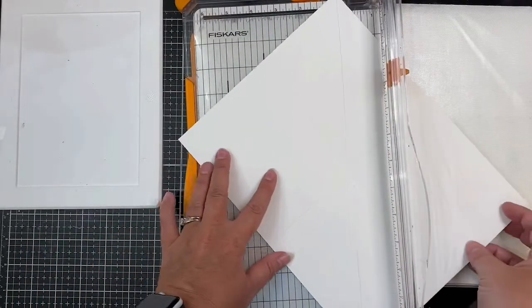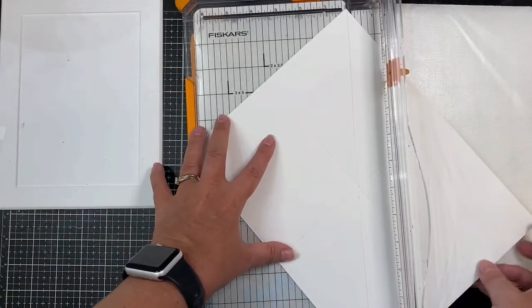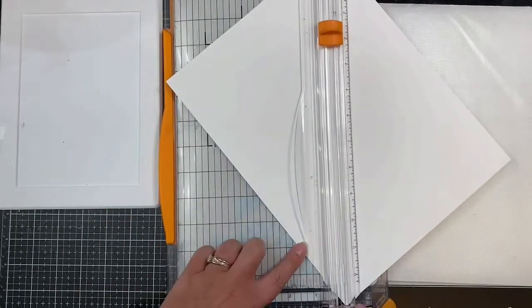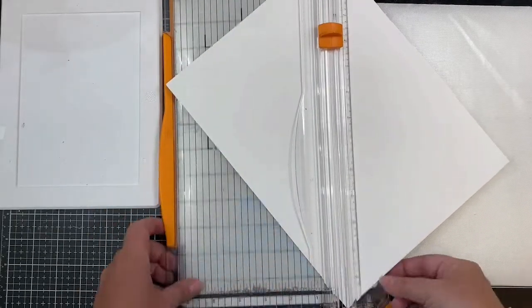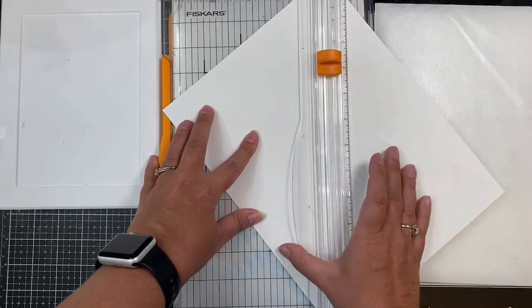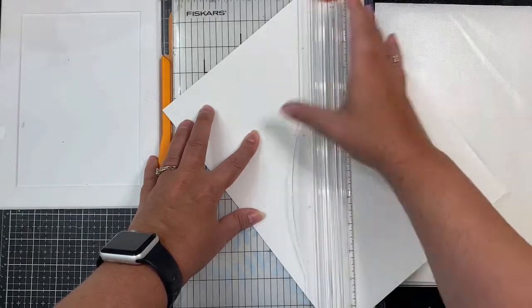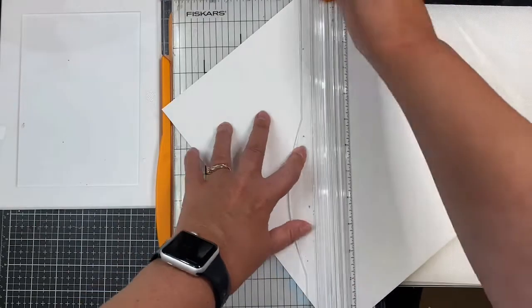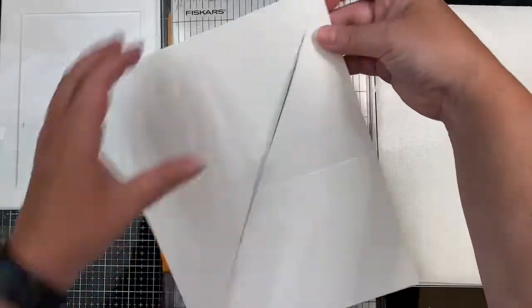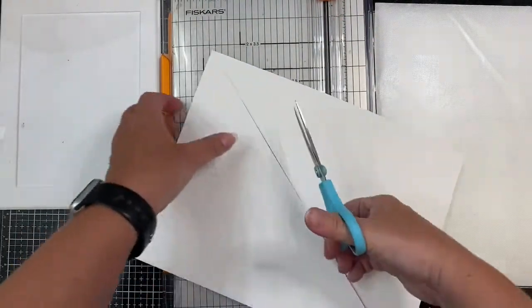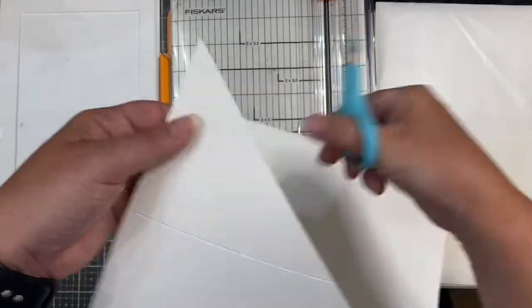And then this next part you can either cut along that pencil line with a pair of scissors or you can use a paper trimmer. This particular paper trimmer wouldn't let me place the paper along that diagonal line and close it because it wouldn't fit, it's too long. So I had to manipulate it a little bit and place it under the plastic bar at an angle and then just cut what I could along that line and then after doing that I cut the rest of it with some scissors.